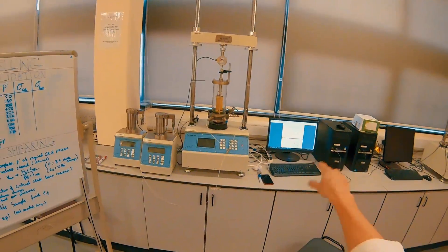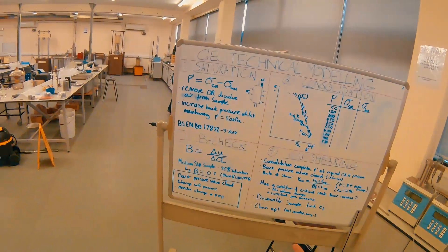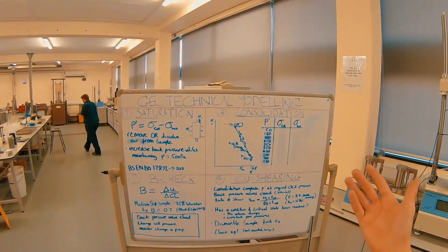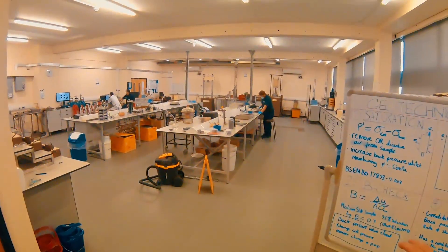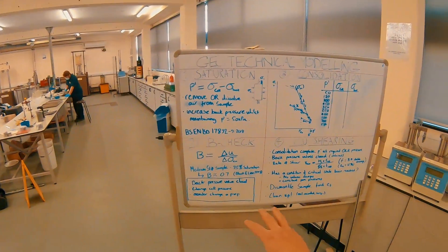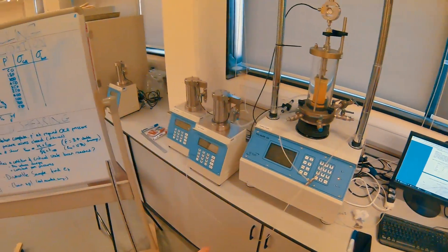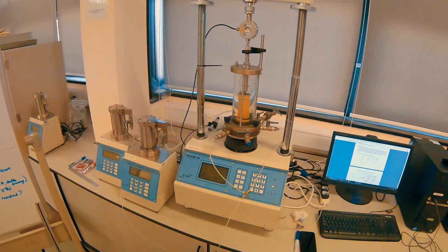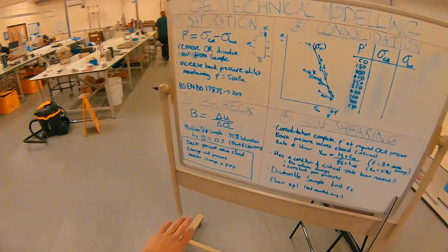So for this purpose, it's unlikely we're going to get to a high value. But from Black and Lee 1973, if you want to get a 95% saturation level, which isn't too bad for what we're going to be doing during consolidation and shearing, we need to get a B value of 0.7. So let's look at working this out on our triaxial cell.